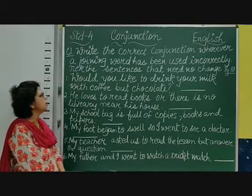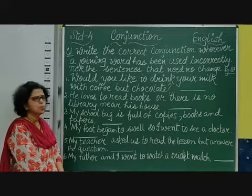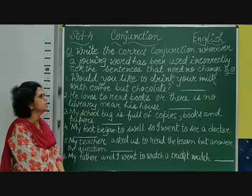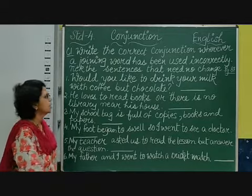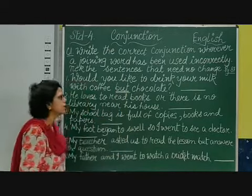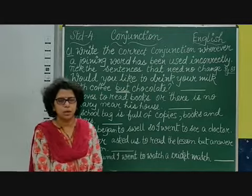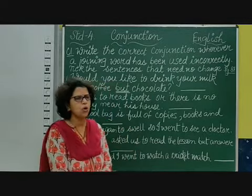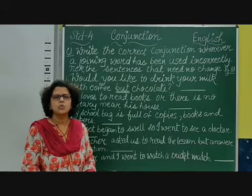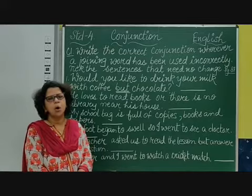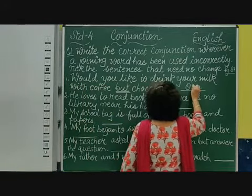First sentence: 'Would you like to drink your milk with coffee, but chocolate?' The conjunction here is 'but', but is it correct? We are giving an option — a choice — whether you want to drink milk with coffee or chocolate. Two options are being offered: coffee or chocolate. So 'but' is wrong here because 'or' is used when we give a choice. Therefore, we have to use the conjunction 'or'.